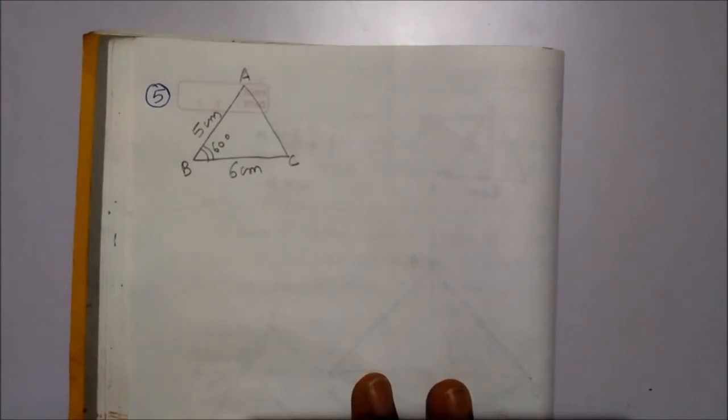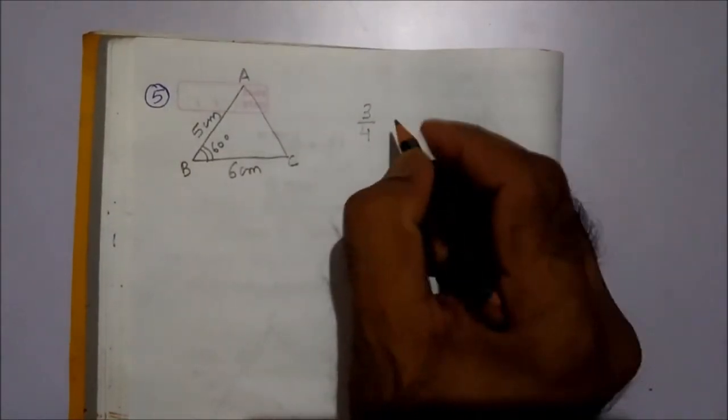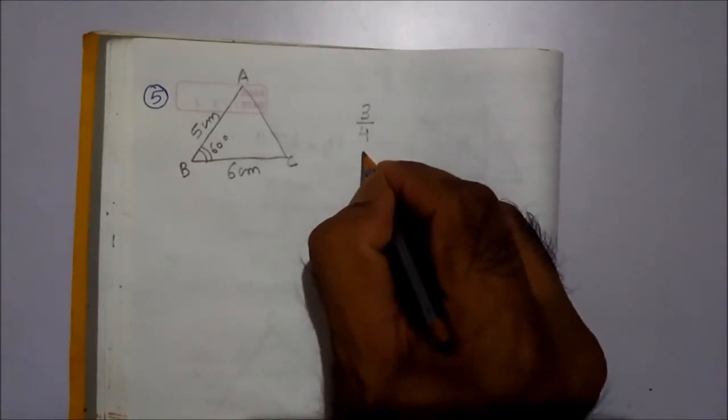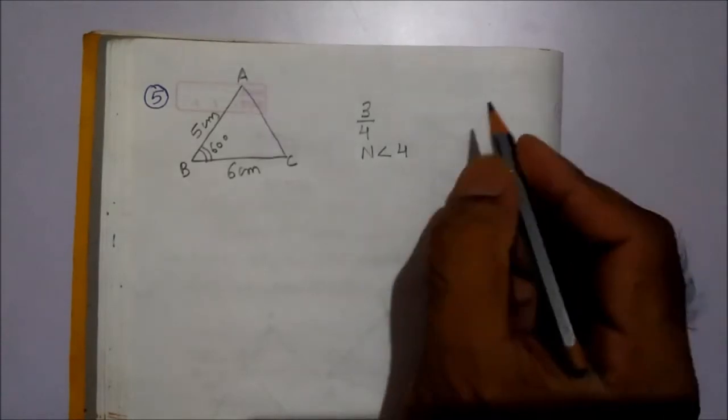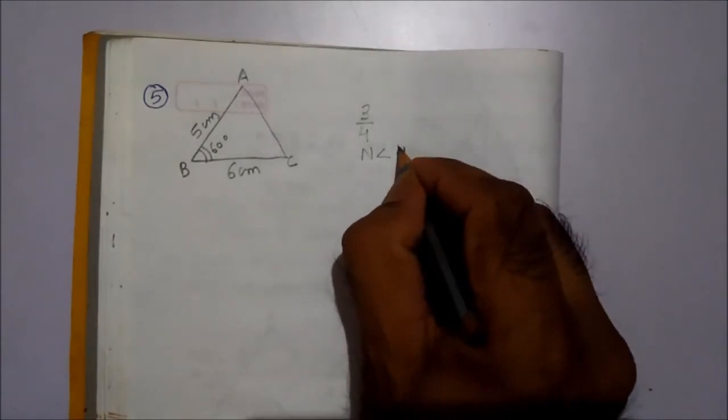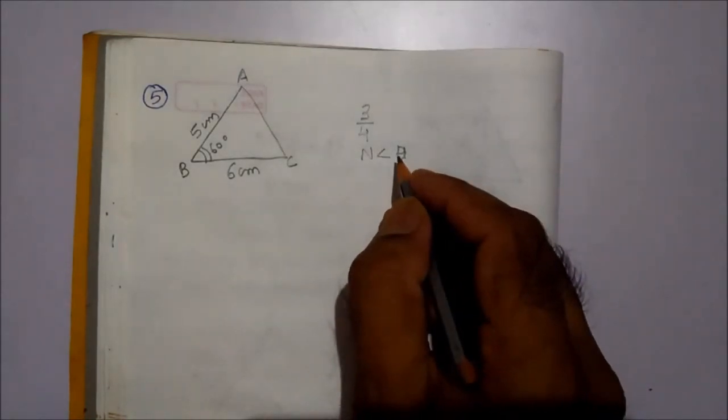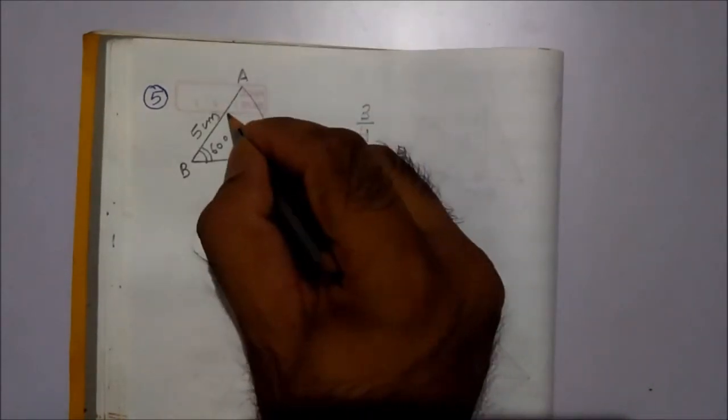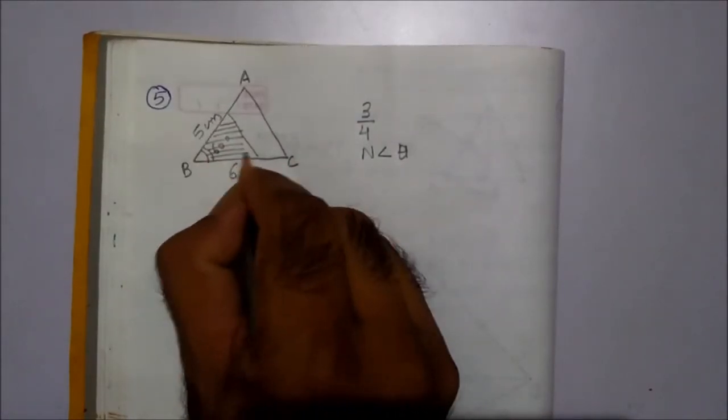And the scale ratio is given 3 upon 4. Here, the numerator is less than denominator, so our new triangle will be smaller than the original triangle.